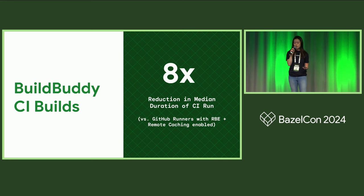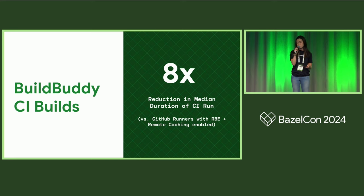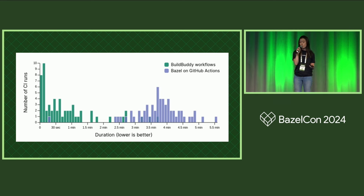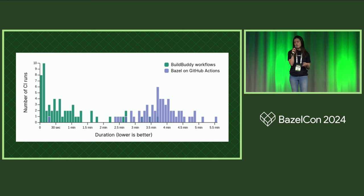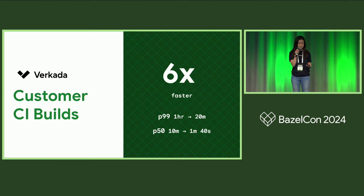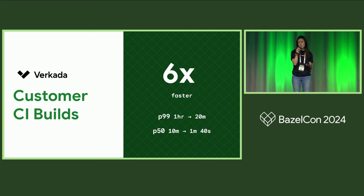When we implemented these changes, we saw an 8x reduction in the median duration of our CI versus using GitHub runners. Before we had an optimized setup, we were still using remote cache and RBE, and we were still able to see this significant performance improvement. From this graph, you can see that before, our average CI build took about four minutes. That's definitely enough time to get distracted and go on your phone — so if I'm context switching every time CI runs, I can easily waste an hour on something that should take a couple minutes. Now that our CI runs in 20 seconds, it makes me significantly more productive. And if you don't trust our self-reported data, we asked one of our customers who reported their builds now run six times faster on CI — their P50 went down from 10 minutes to 1 minute and 40 seconds.